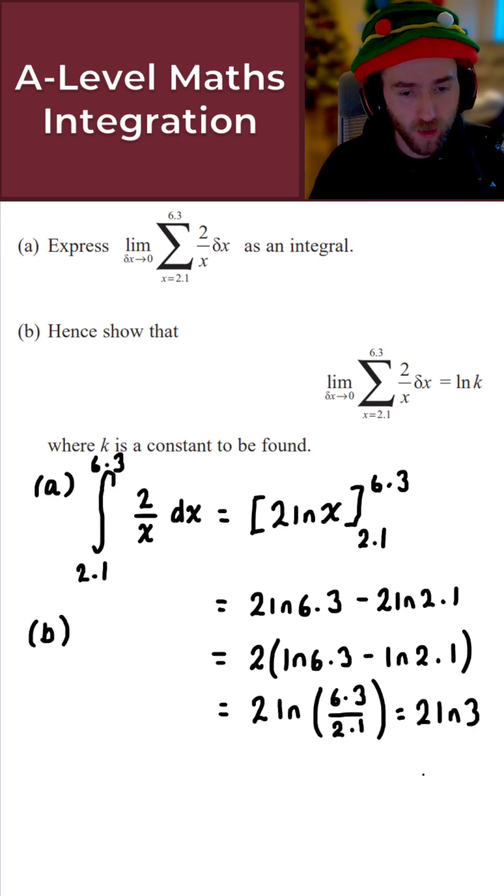And we're pretty much done at this point. What I can now do is use the power rule for logarithms, so this 2 comes up as the power. This is the same as ln(3 squared). And 3 squared equals 9, so we get ln 9.